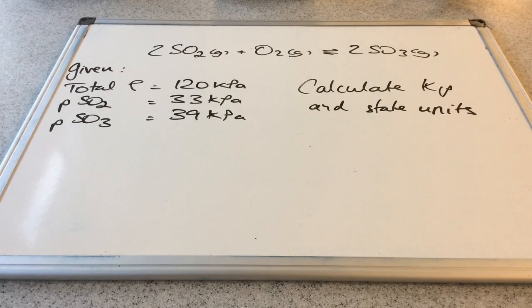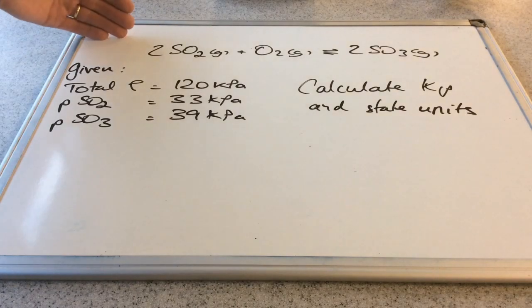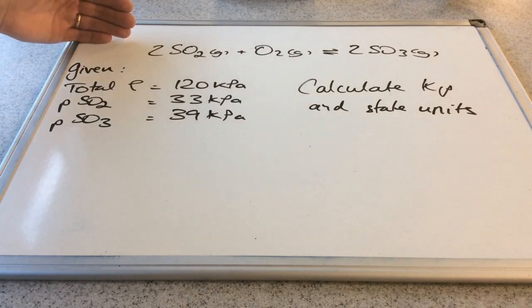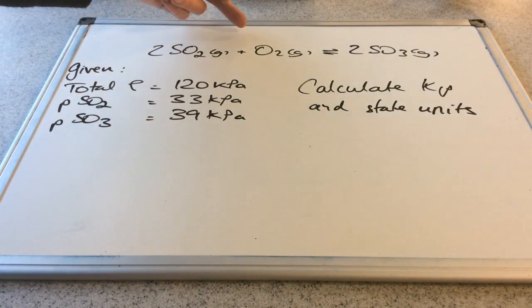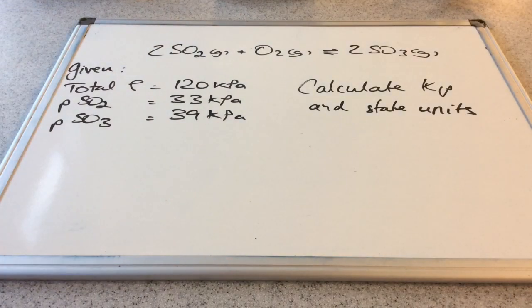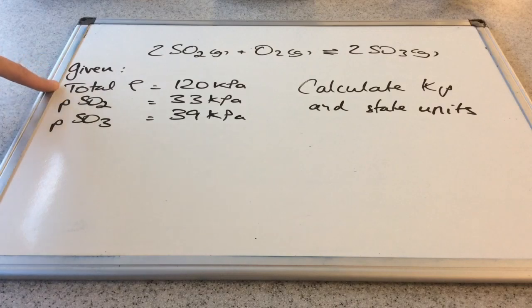We've got this equilibrium system that's actually found in the contact process used to make sulphuric acid. So two moles of sulphur dioxide and a mole of oxygen in equilibrium with two moles of sulphur trioxide. So we're given the total pressure of the system and the partial pressures of the sulphur dioxide and trioxide.